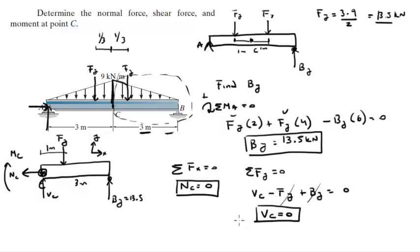Last but not least, let's do the moment. Assume that clockwise is positive. The sum of the moments at C is equal to zero, so M_C plus F_Y times 1, because the distance from C to F_Y is 1 meter, minus B_Y times 3, because the distance from C to B_Y is 3 meters. We got F_Y and B_Y, they're both 13.5.